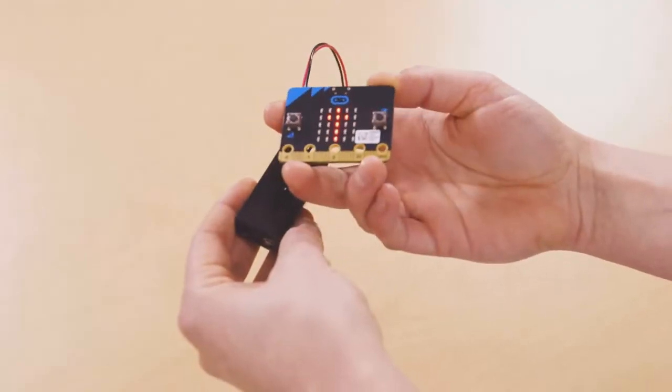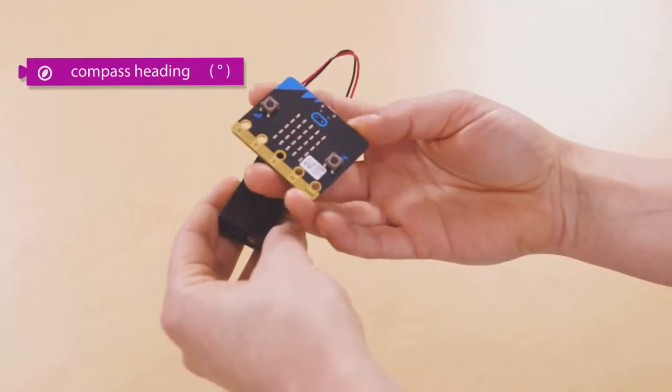This sensor uses the Earth's magnetic field to detect the direction the micro:bit is moving.